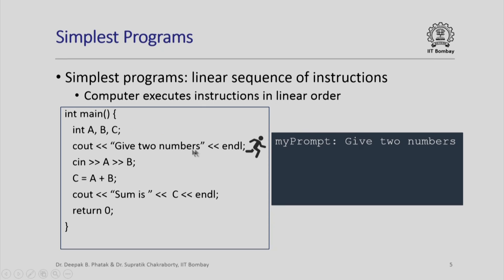The next statement is really the first statement that the computer executes, shown here by a running icon. When the computer executes this statement, you see on your screen a prompt and then the computer prints 'give two numbers'. The computer after executing the statement is going to execute the instruction that appears exactly after this in sequence. So the next instruction the computer will execute is the reading of the values of a and b. When the computer executes that statement it is waiting for the user to input the values of a and b from the keyboard.